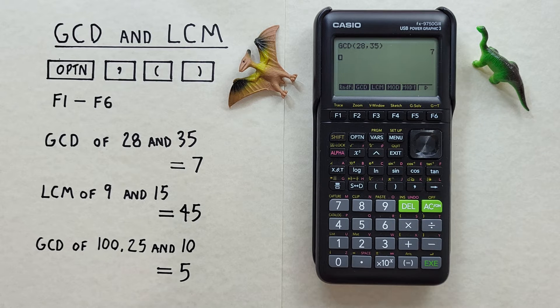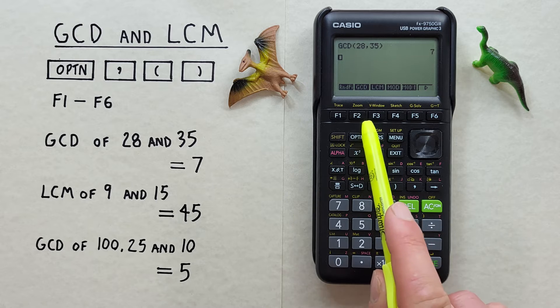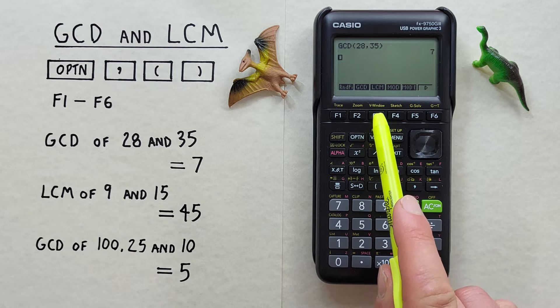What about LCMs, or least common multiples? Let's find the LCM of 9 and 15. Again, we can find it in that same menu under F3, so if we hit that,